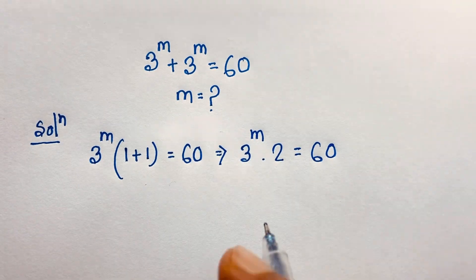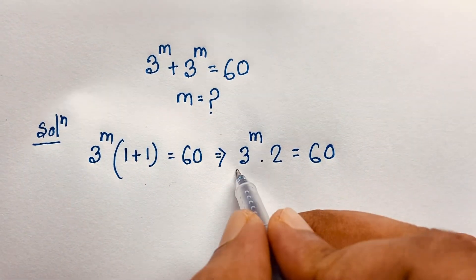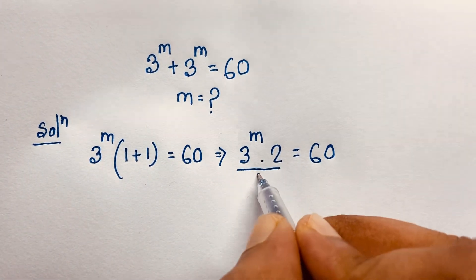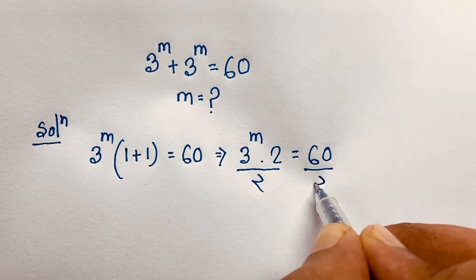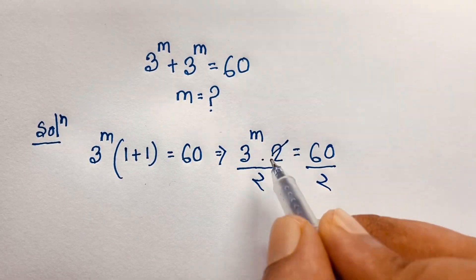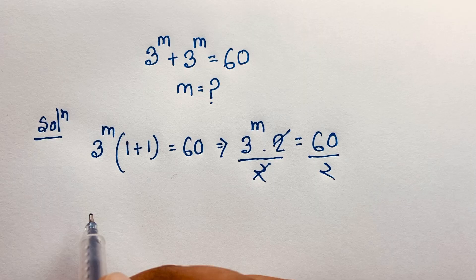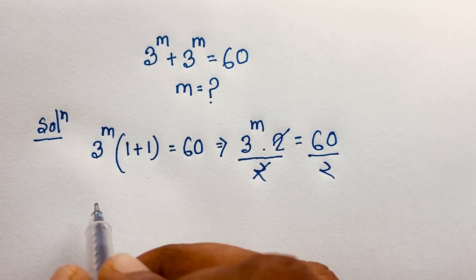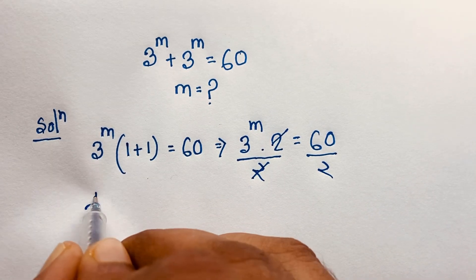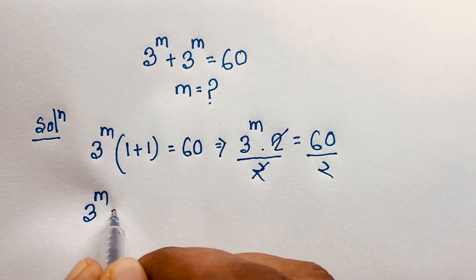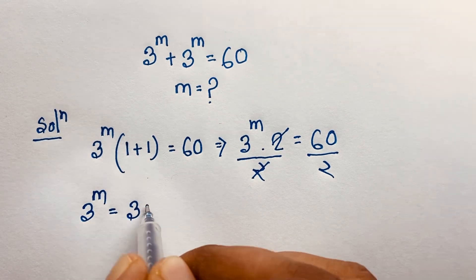Now I divide both sides by 2. The 2 cancels out, and we find that 3 to the power m is equal to 60 divided by 2, which is 30.